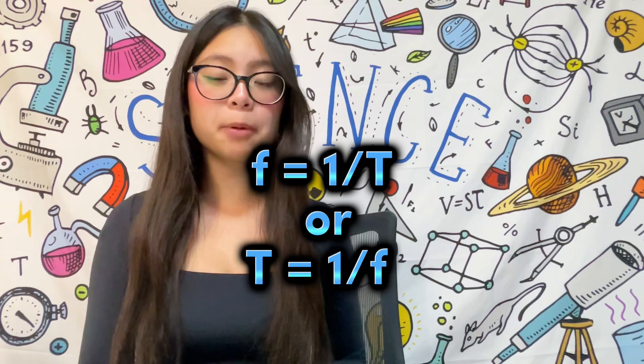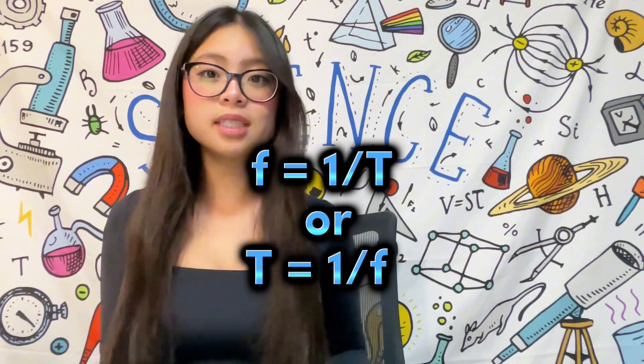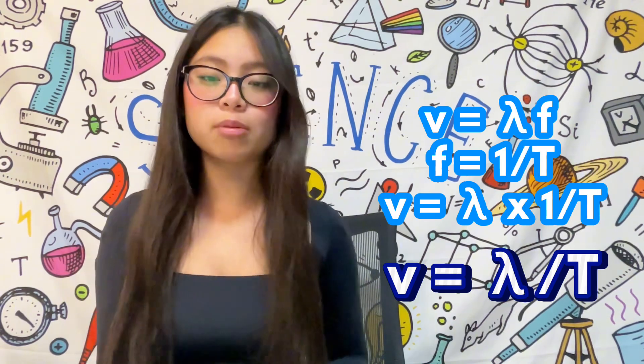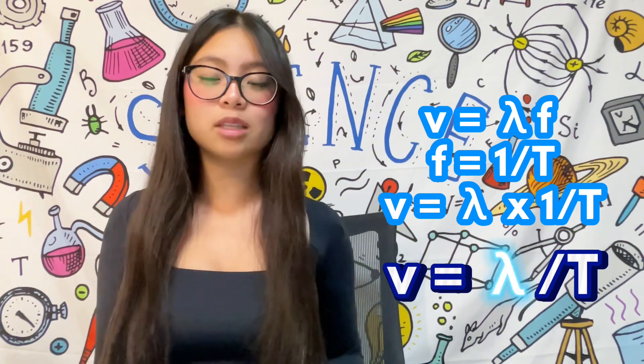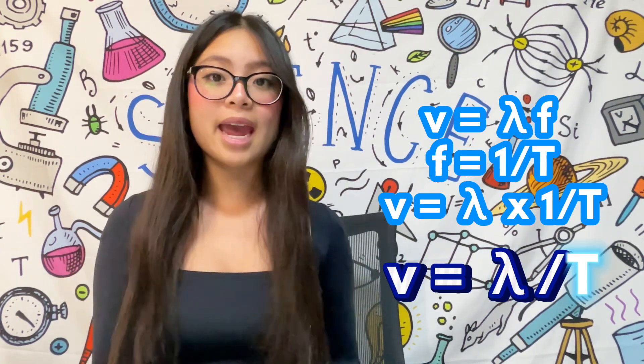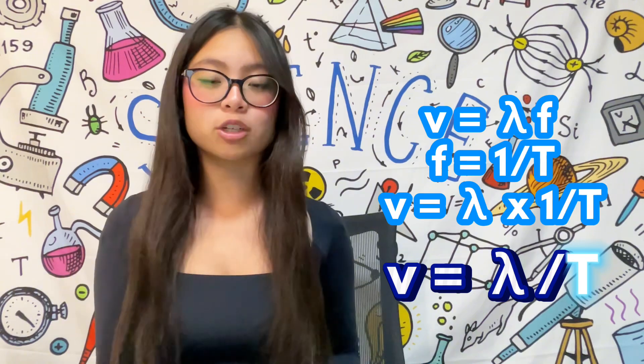However, we know that the frequency is equal to the reciprocal of the period. So we can substitute this into the equation to find a new equation that still solves for speed. It can be represented by the following variables. V equals lambda over T, where V is the speed of the wave, lambda is the wavelength still in meters, and T is the period measured in seconds.